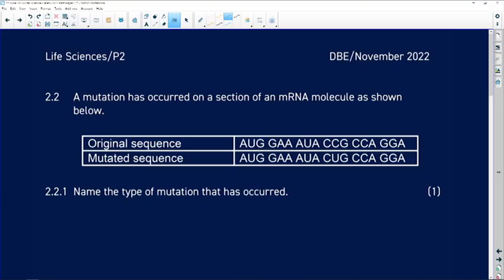Question 2.2. A mutation has occurred on a section of an mRNA molecule as shown below. Remember that when we talk about a mutation, the definition for a mutation is the change in the nucleic acid and it's usually a change relating to the order of nucleotides.